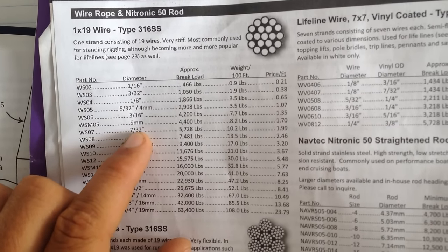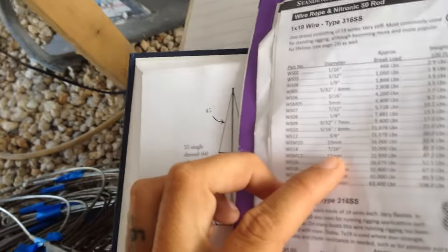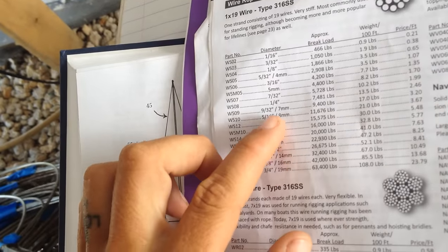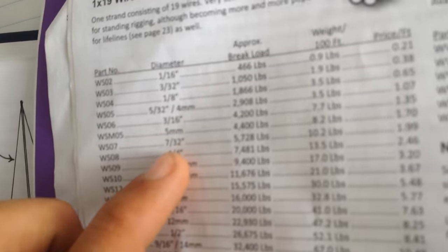And 732 was exactly what the boat had on it to begin with, which is kind of exciting that I was able to calculate that and it worked out. And it proves that whoever did do the rig last did do a good job. So we are going to upgrade to a quarter inch, which if you look here, a quarter inch is the next step up from 732.